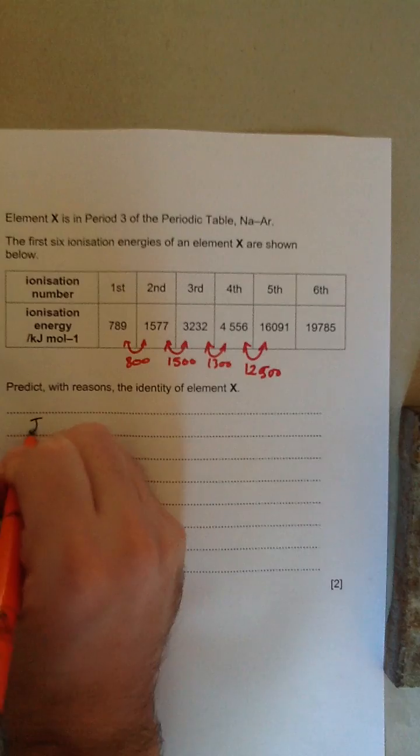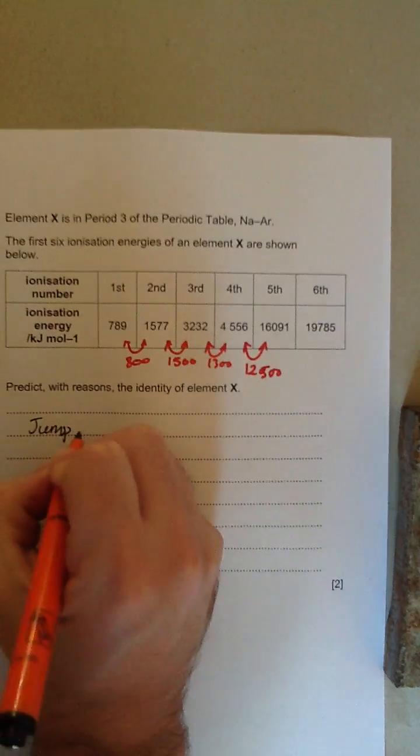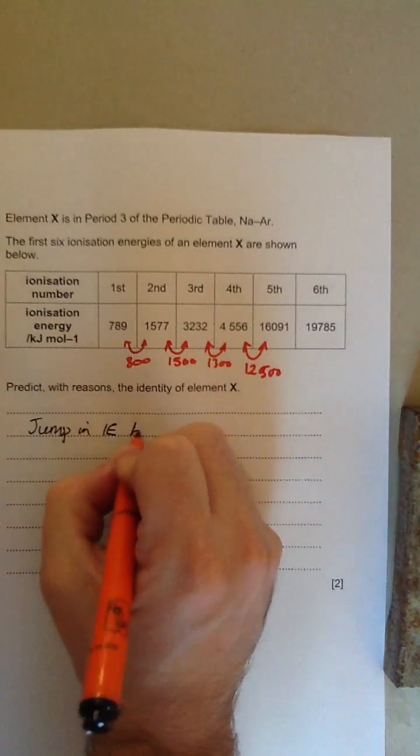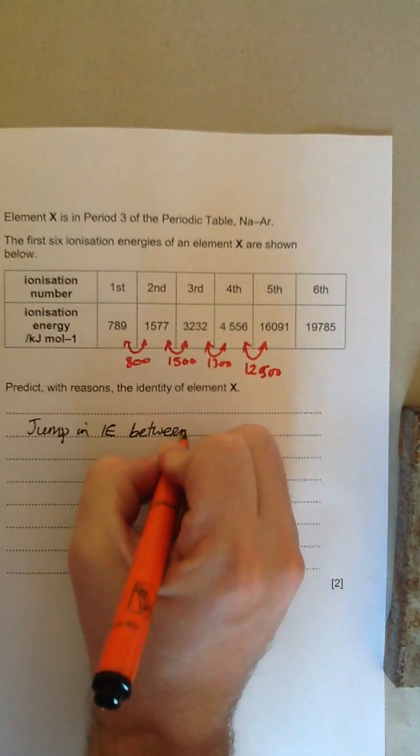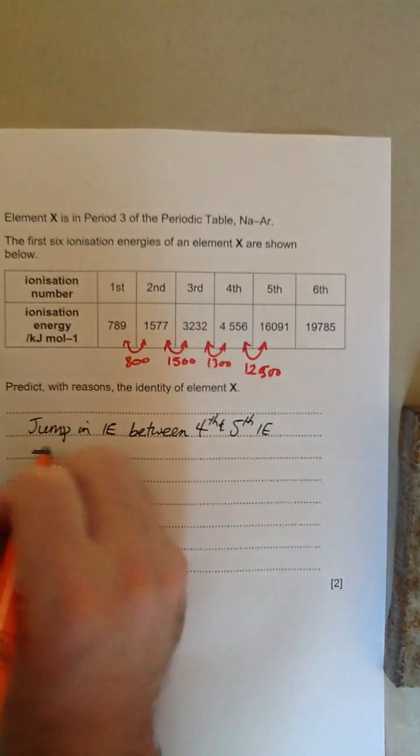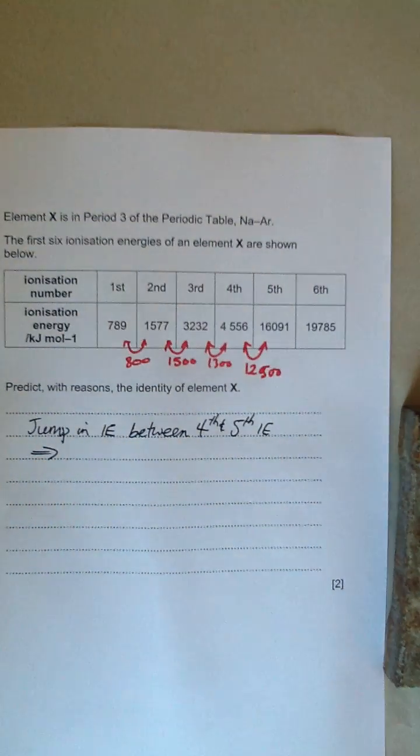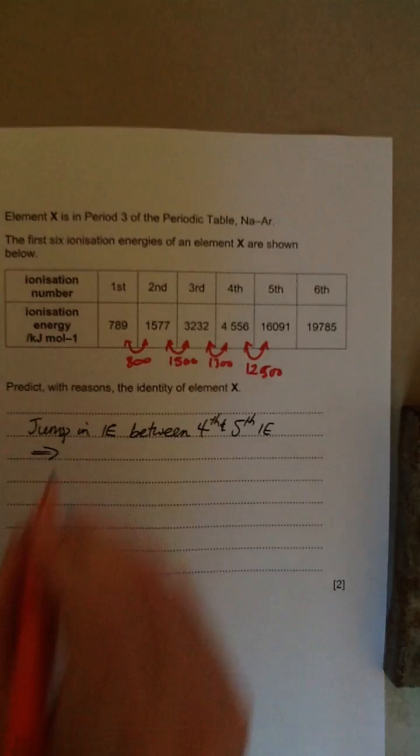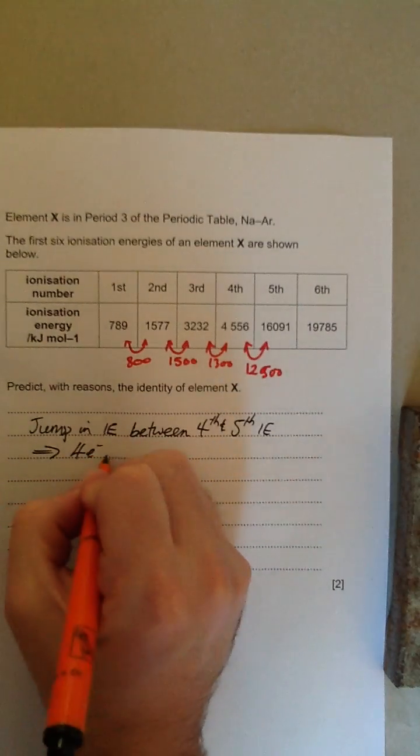So a good answer would be: there is a jump in ionization energies between the fourth and fifth ionization energy. Therefore, because it's easy to remove the first four relatively, but hard to remove the fifth, it means there are four electrons in the outer shell.